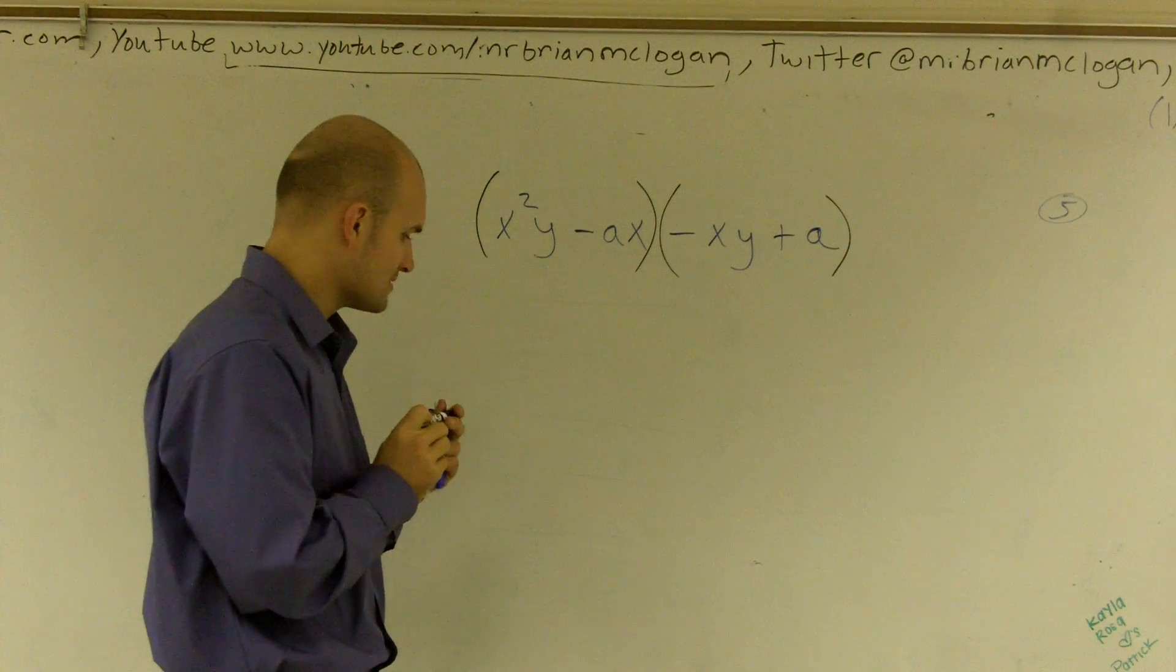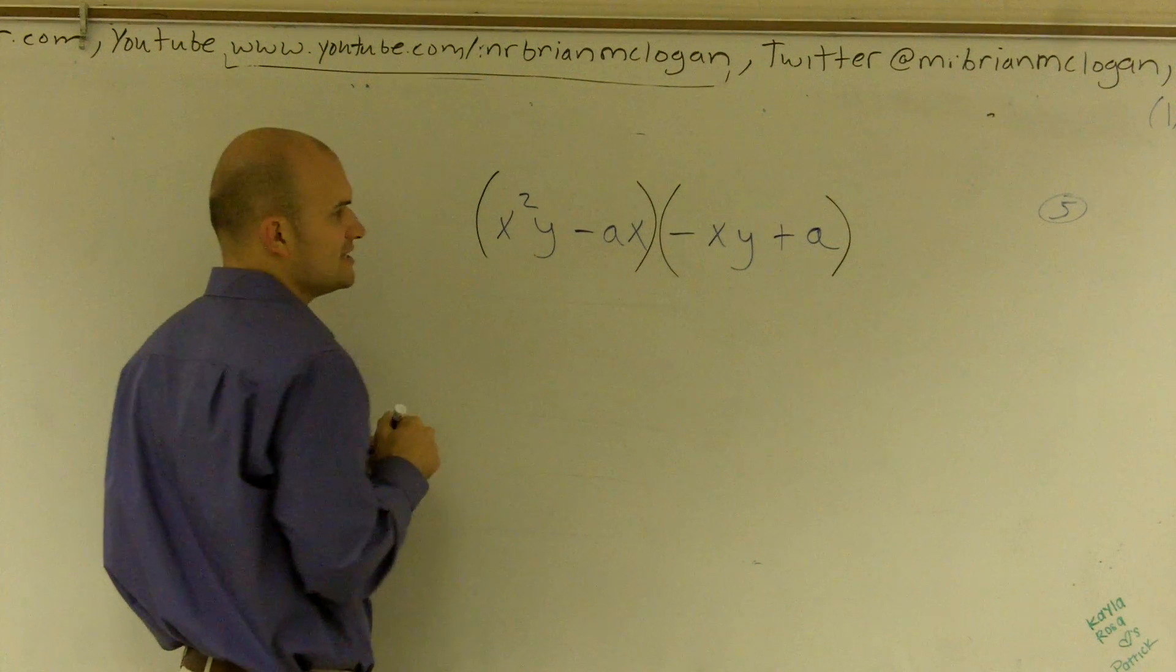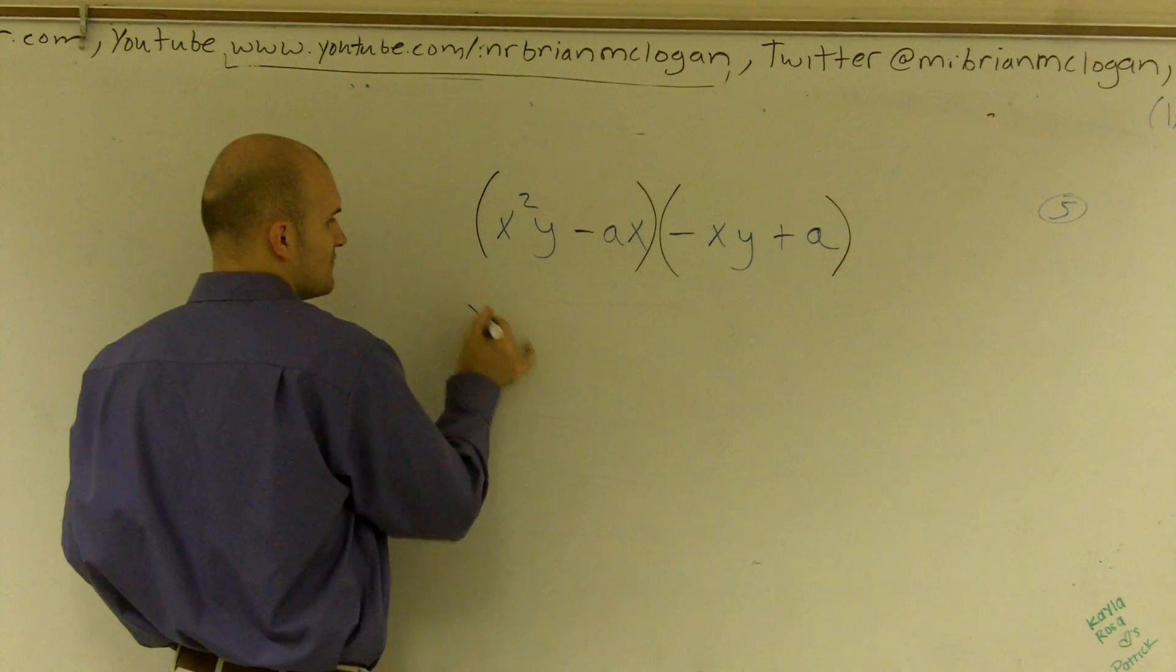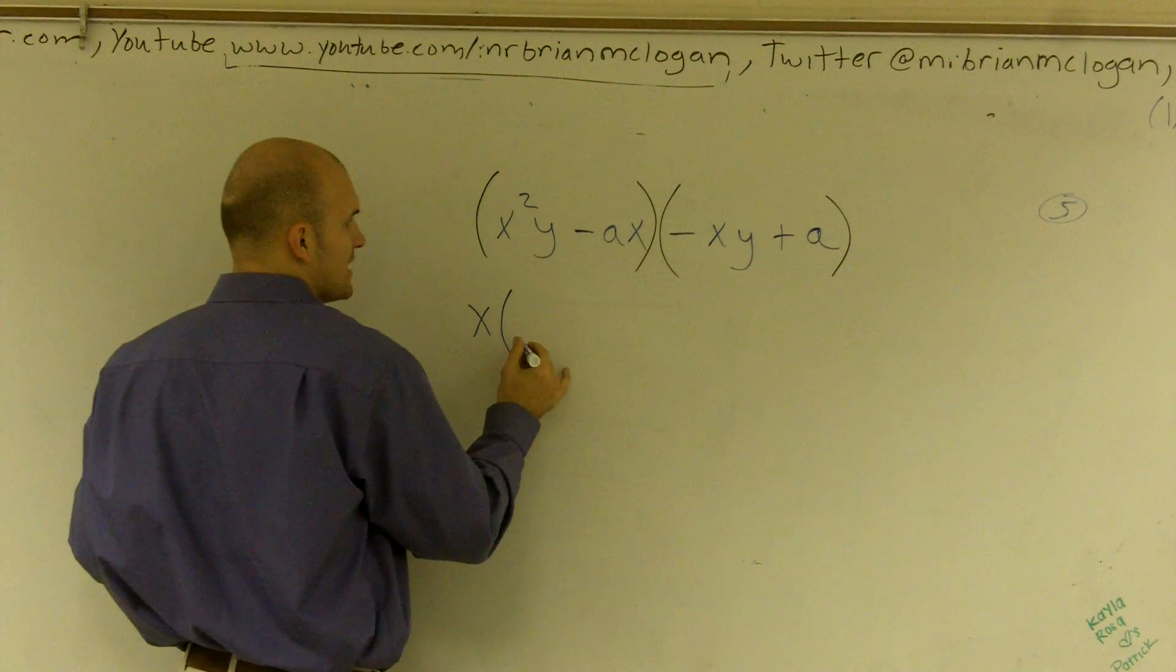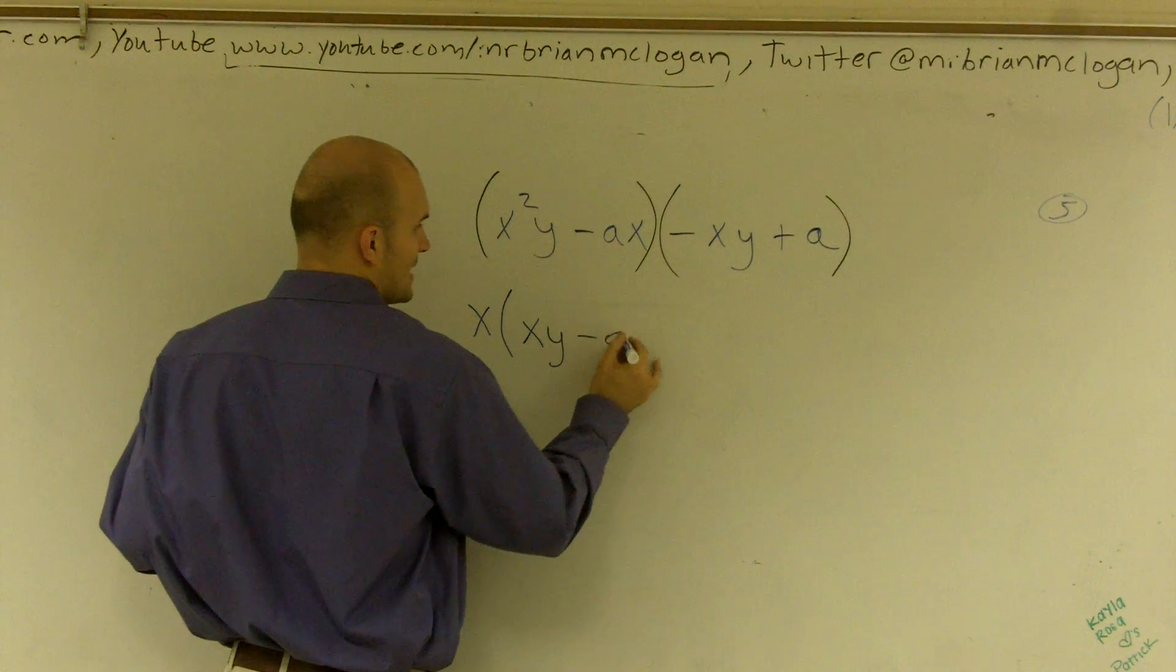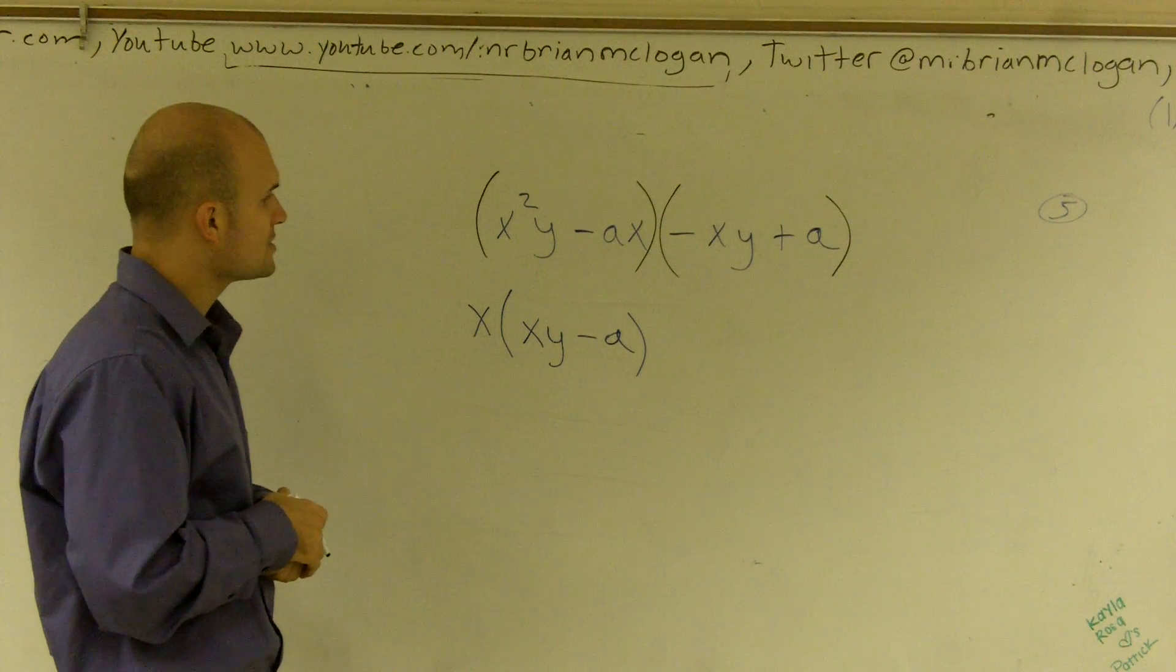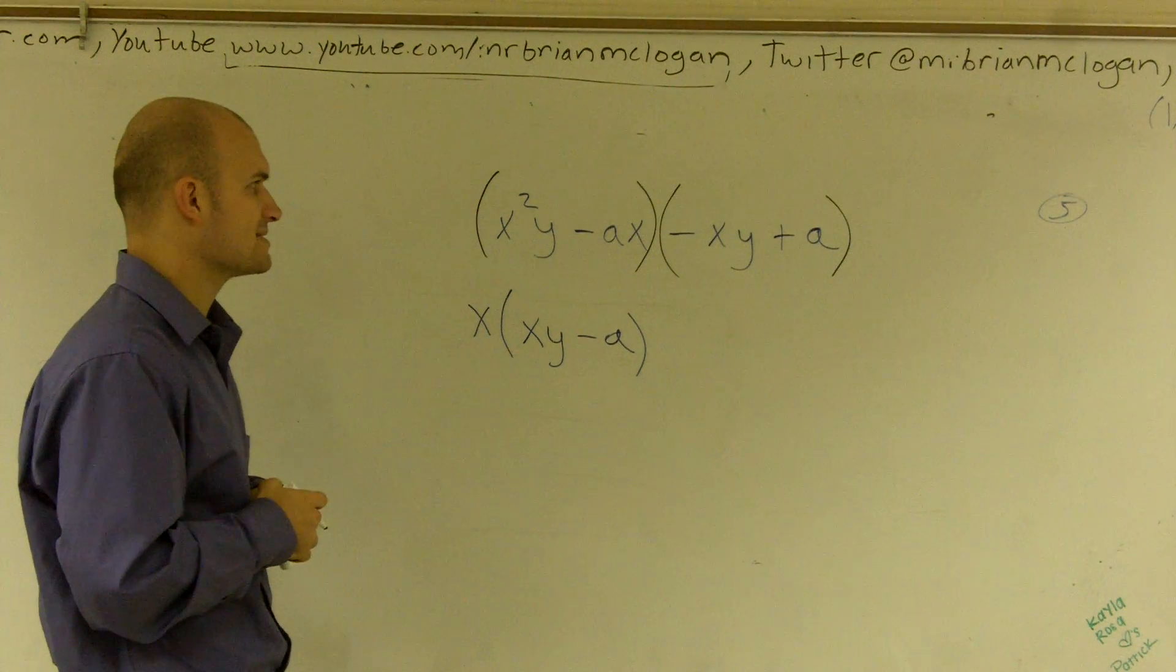Then what I'm going to do is now let's just see what do these have in common that I can take out. Well, I notice that these both share an x, so I can factor out an x. When doing that, I'm left with xy minus a. So if I factor out an x, I'm left with xy minus a.